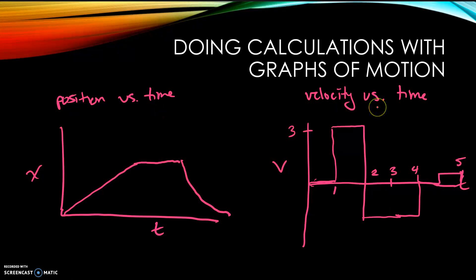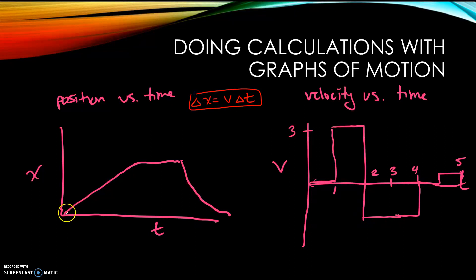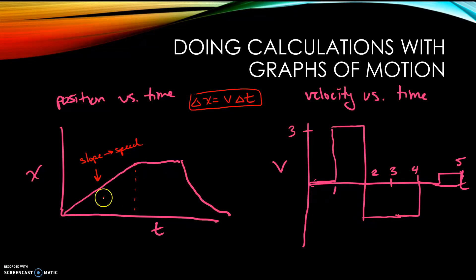It is possible to do calculations with graphs of motion. The equation for constant velocity motion is: change in position equals velocity times change in time. On a position versus time graph, this is a constant slope, and the slope gives you the speed of the object. So if you had numbers on here, you could find how fast the object is moving in any area by calculating the slope.